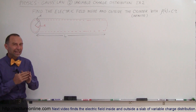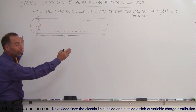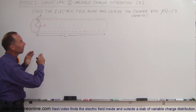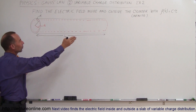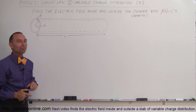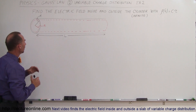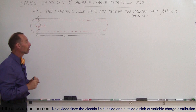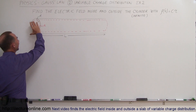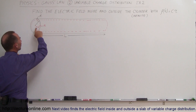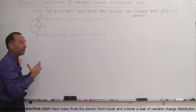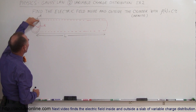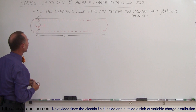We're going to take an infinite cylinder — even though it's hard to draw — and just take a section of it, assuming the cylinder goes on infinitely in both directions. We want to find the electric field inside and outside the cylinder, so let's start with the Gaussian surface inside the cylinder, a distance A away from the center. A can be any variable, any distance from zero to the outside. Note that R is the radius of the cylinder.